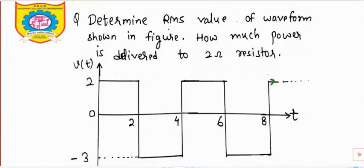Let's look at this example: determine the RMS value of the waveform shown in the figure. Also we have to find out how much power is delivered to a 2-ohm resistor. That means R = 2 Ω, and we have to determine the power delivered to this resistor.